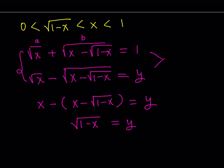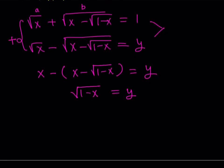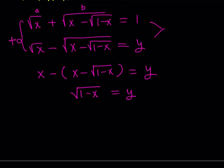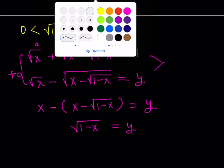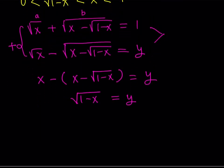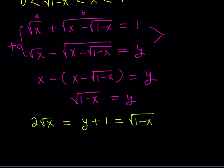This is cool, but we need to make it cooler. Let's go ahead and add these two equations. When we add them, the second one cancels out, and we get 2 times the square root of x is equal to y plus 1. But we know that y is equal to the square root of 1 minus x, so we can substitute that in. This is what we get: 2√x = √(1−x) + 1.